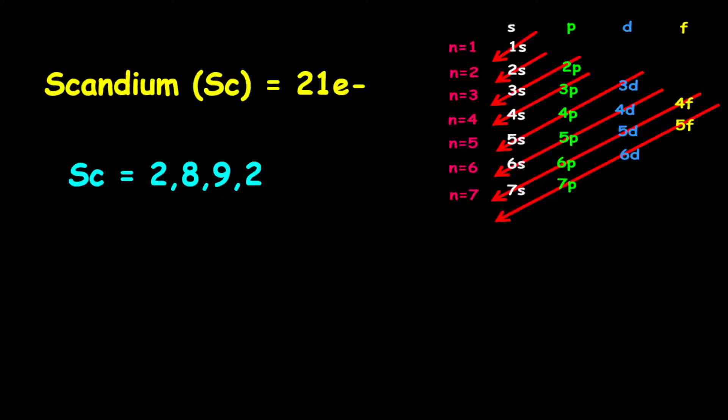Yes, 9 electrons on the third shell, and I will explain this shortly. Then we have 2 electrons on the fourth shell. So therefore, the electron configuration is given as 2, 8, 9, 2.